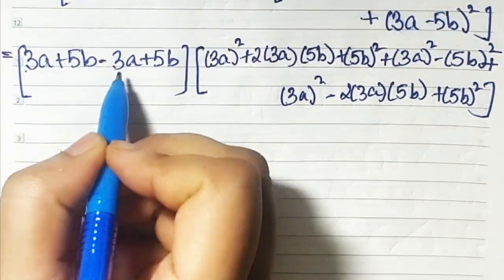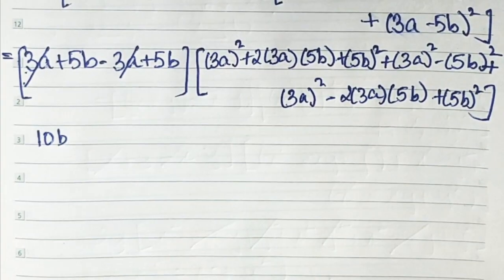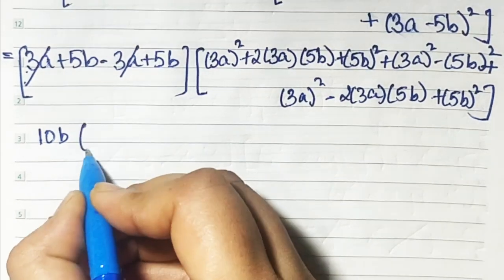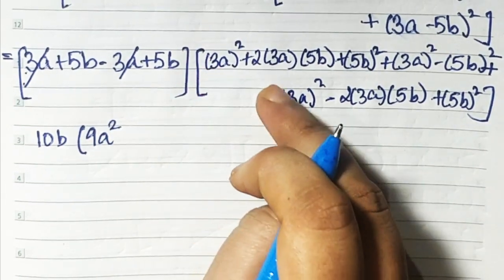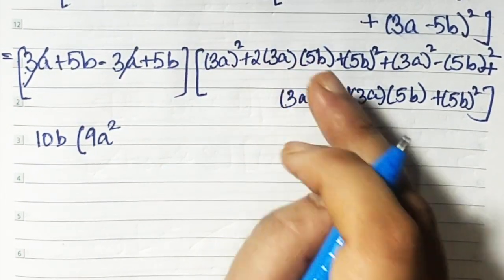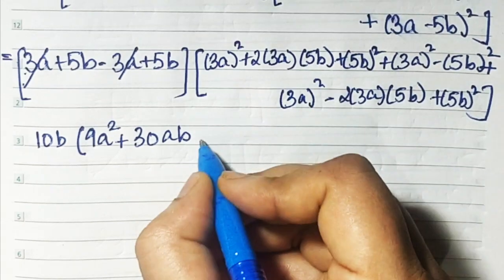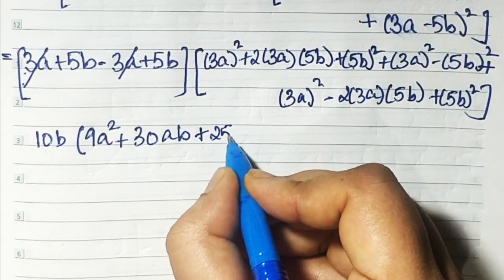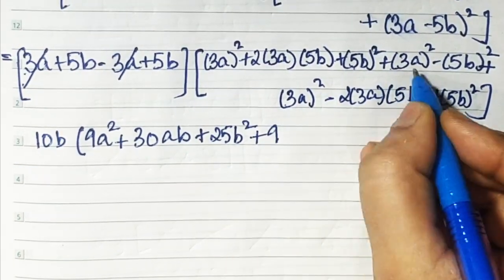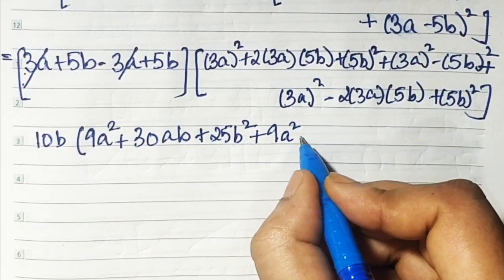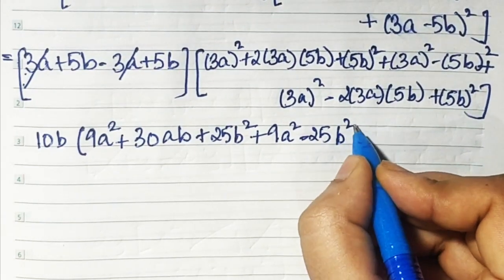Here we have plus 3a and minus 3a, so they get cancelled. 5b plus 5b is 10b. Now inside: 9a square from (3a)² is 9a square, 2 times 3a times 5b is 30ab, and (5b)² is 25b square. Then 9a square minus 25b square.